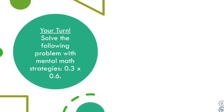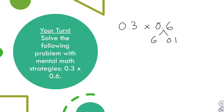Your turn. Solve the following mentally: 3 tenths times 6 hundredths. To solve this you need to account for place value and multiply the non-zero digits. I'll get you started — split 6 hundredths into 6 and 1 tenth. First multiply those two together, then your second step will be multiplying that result times 1 tenth. Go ahead, solve and submit your answer.